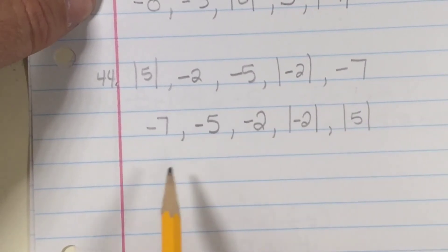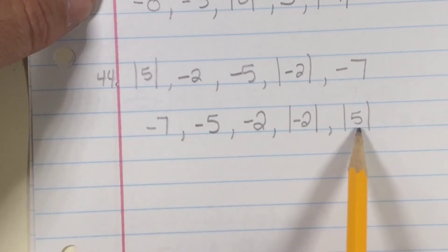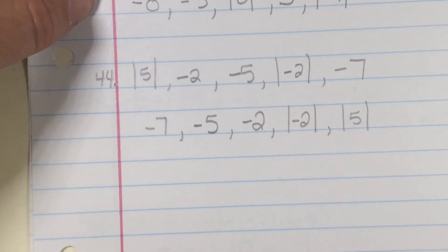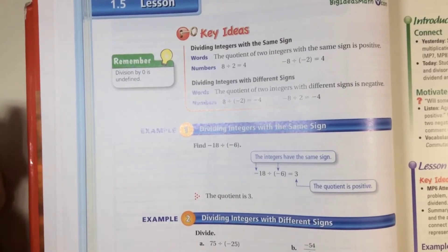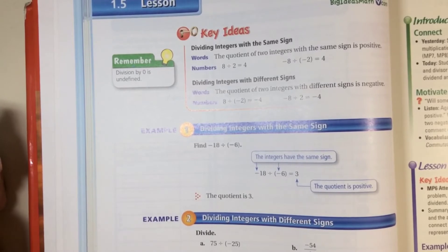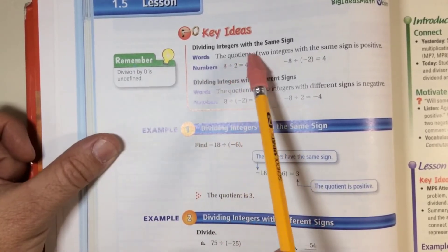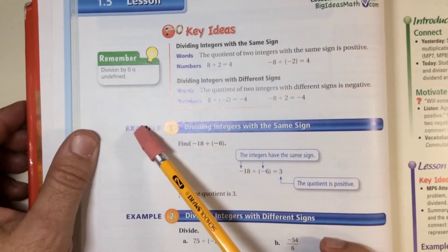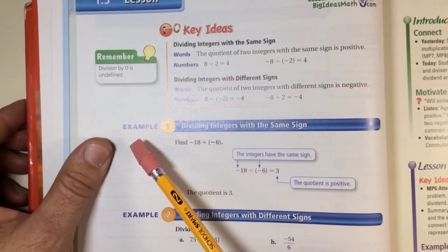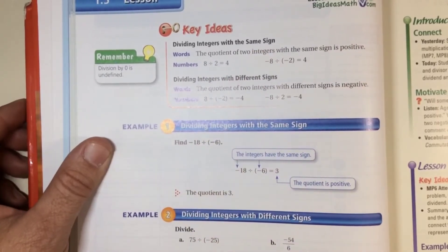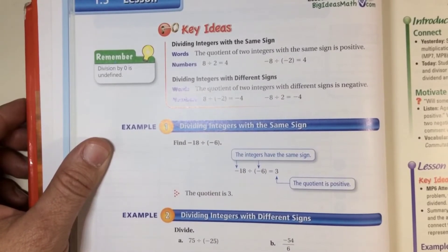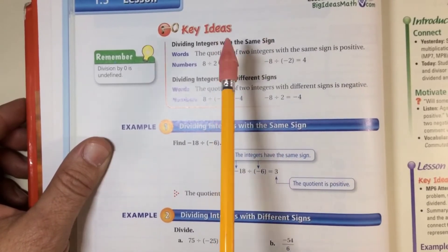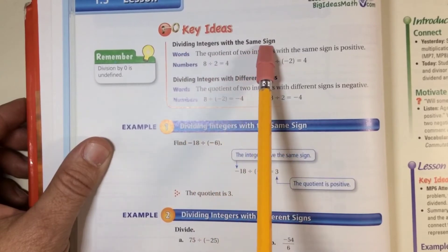And there they're in order from least to greatest. This is lesson 1.5, which is on page 30 in your textbook — dividing integers. We just did multiplying integers with the last lesson. This is the same rule, of course, except you're dividing instead of multiplying. Dividing integers with the same sign: the quotient of two integers with the same sign is positive.